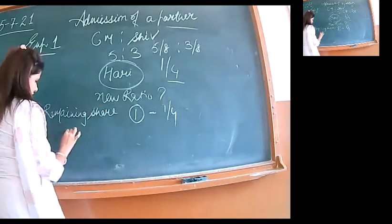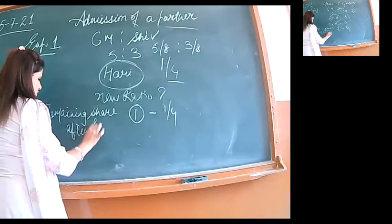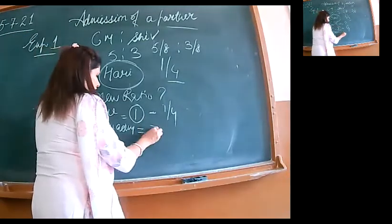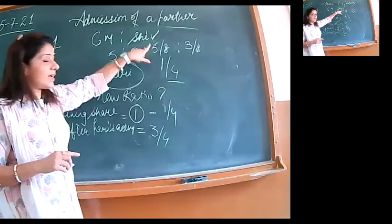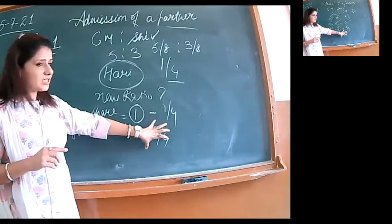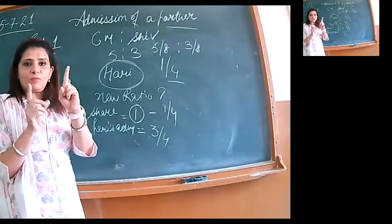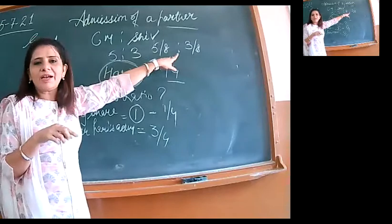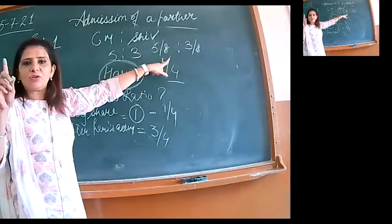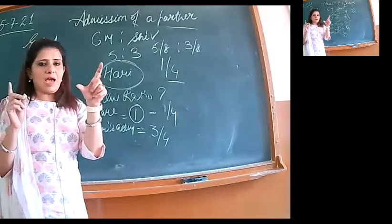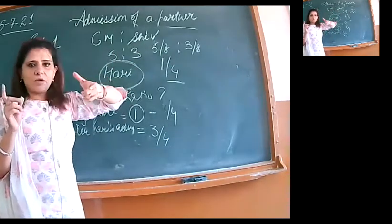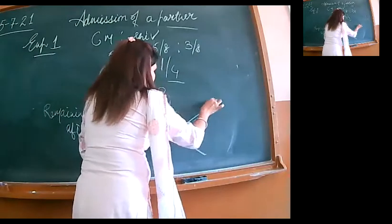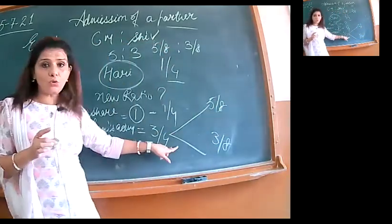So, remaining share after admission: one minus one by four equals three by four. Next assumption: whatever is remaining, my old partners will divide among themselves. What's remaining? From one, Hari got one-fourth, remaining is three-fourth. I am assuming I had one chapati before his admission. That one chapati they were dividing into five by eight and three by eight. When I add both, eight by eight comes, total is one. So this was the full unit I was having. Hari was promised one-fourth. How much remaining? Three by four.